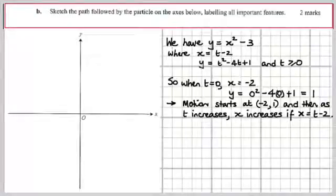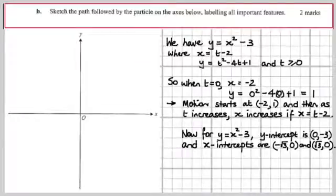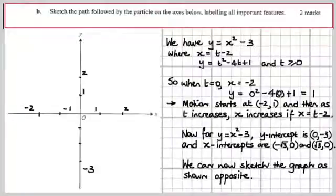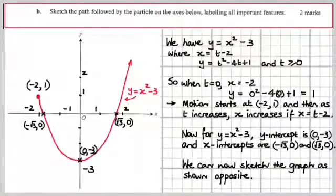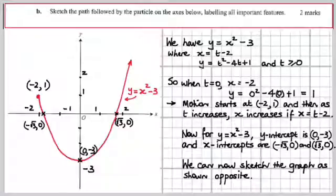For y = x² − 3: the y-intercept is (0, −3), and setting y = 0 gives x = ±√3 for the x-intercepts. Now we sketch — put some scale on the axes. The particle starts at (−2, 1), passes through the intercepts, tracing out a parabola. Label the starting point and all intercepts as coordinate points, and the sketch should be complete.